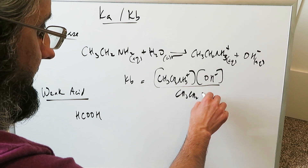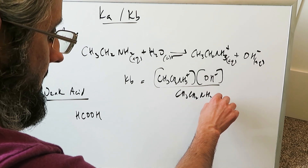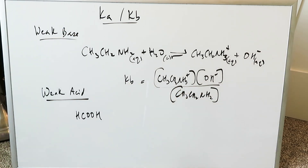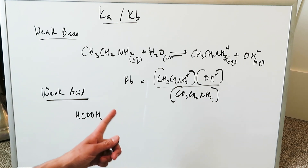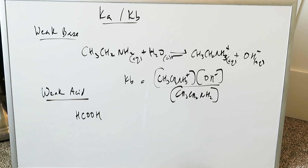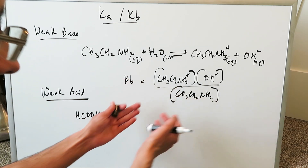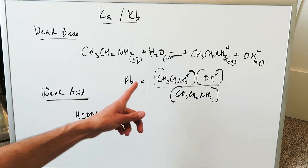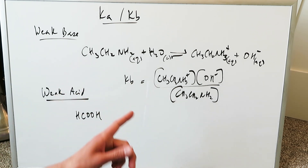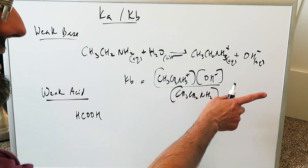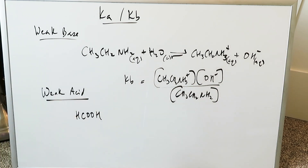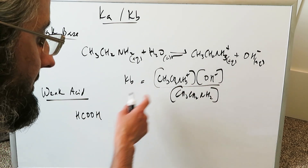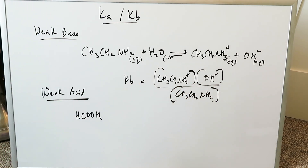This is exactly where your base dissociation comes into play. We're looking at a weak base, hence we're looking at KB. If you're looking at a strong base, you don't have to do this because a strong base dissociates 100% into its relevant species. So here we're looking at KB.